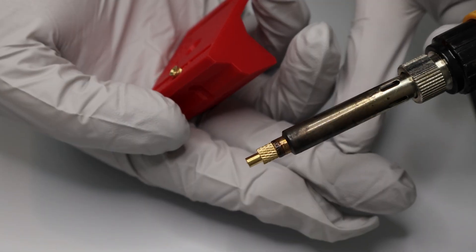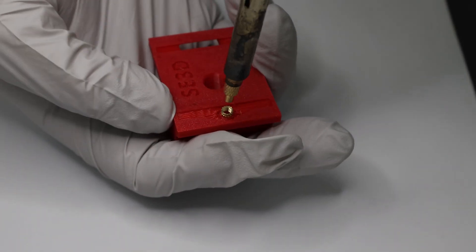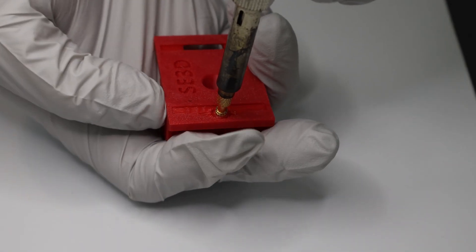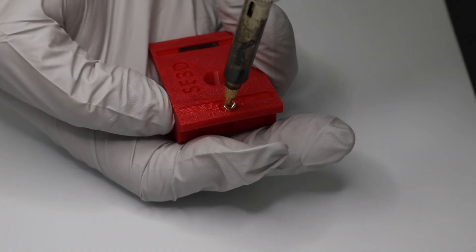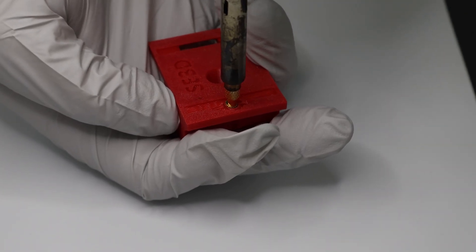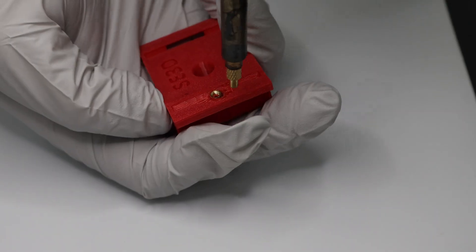As I demonstrate how not to insert a heat set knurled insert, let's talk about why someone might want to do this. The primary reason is an internal spool holder, which allows you to reduce the overall footprint of your printer as well as keep your filament dryer while printing.